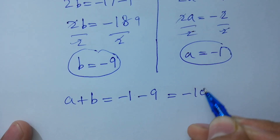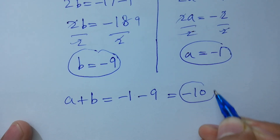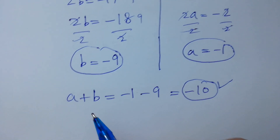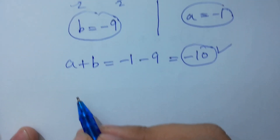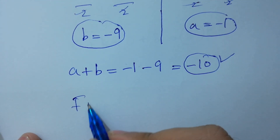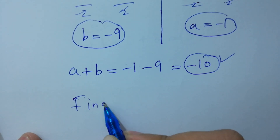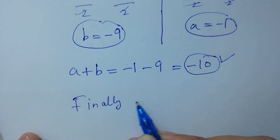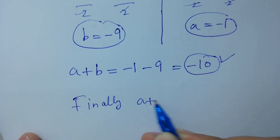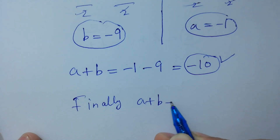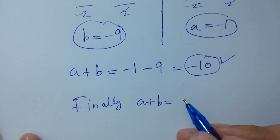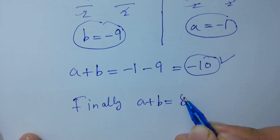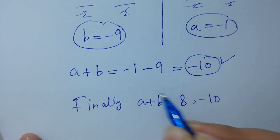We get minus 10, which is also a value of a plus b. So finally, a plus b equals 8 or minus 10.